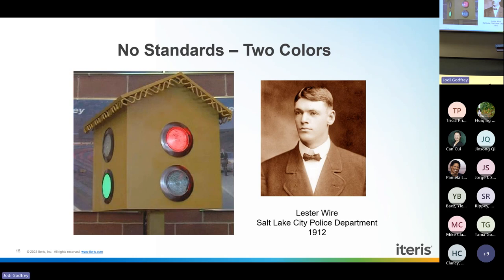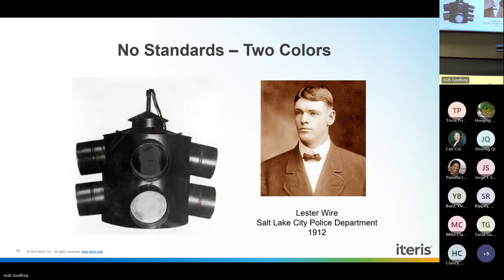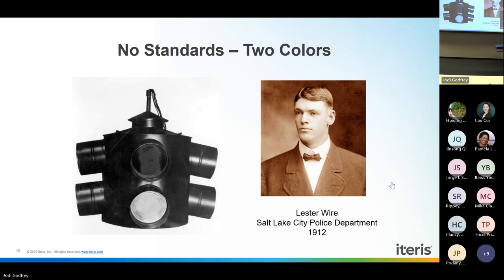Mr. Lester Wire continued working on the idea and came up with a device starting to look more like a four-way signal, assembled from an oiler or similar parts. It provided for alternating flow of traffic through the intersection.